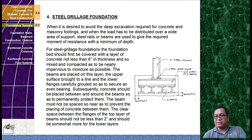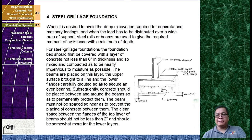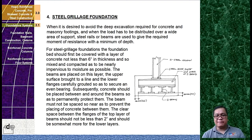Then you have the steel grillage foundation. When it is desired to avoid deep excavation required for concrete and masonry footings, and when the load has to be distributed over a wide area of support, steel rails or beams are used to give the required moment of resistance with a minimum of depth. The foundation bed should be covered with a layer of concrete not less than 6 inches in thickness, compacted to be nearly impervious to moisture. The beams are placed on this layer, and concrete should be placed between and around the beams to permanently protect them. The center space between the flanges of the top layer of beams should not be less than 2 inches.